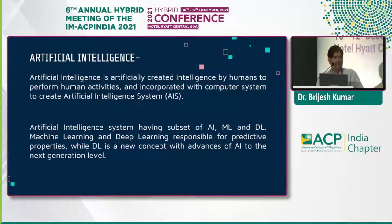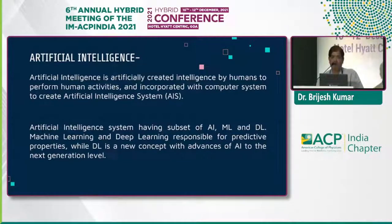What is artificial intelligence? Artificial intelligence is artfully created intelligence by humans to perform human activities, which is incorporated with computer systems to create artificial intelligence systems. Artificial intelligence systems have goals like reasoning, learning, planning, programming, problem solving, etc.